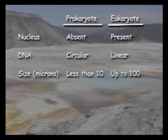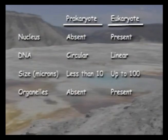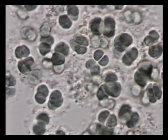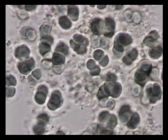Prokaryotic cells are usually smaller than eukaryotic cells — less than 10 microns in length. They are very simple in structure and do not have organelles found in eukaryotic cells. Prokaryotic cells also do not have a cytoskeleton. Cyanobacteria are photosynthetic, capturing energy from the Sun and evolving oxygen, just like land plants.